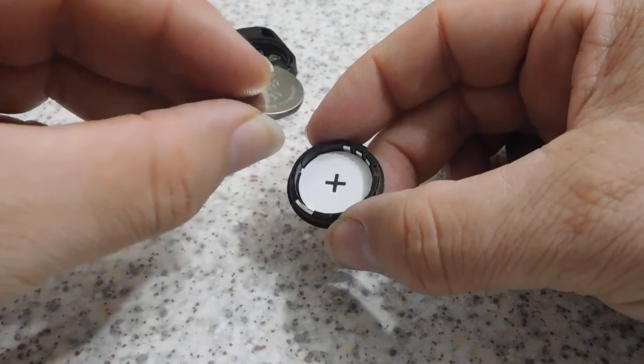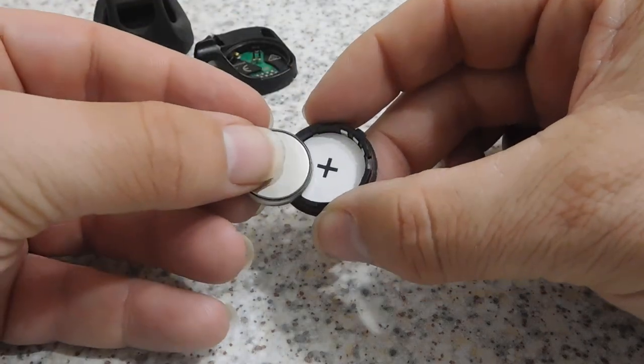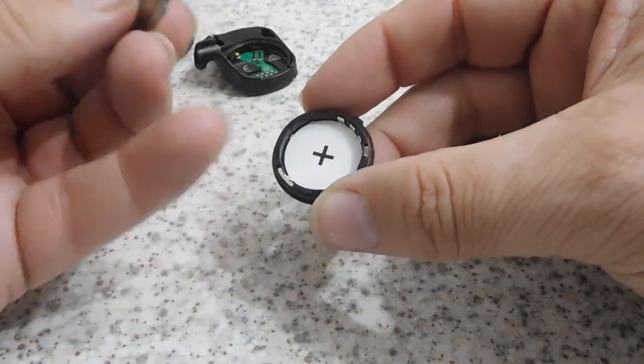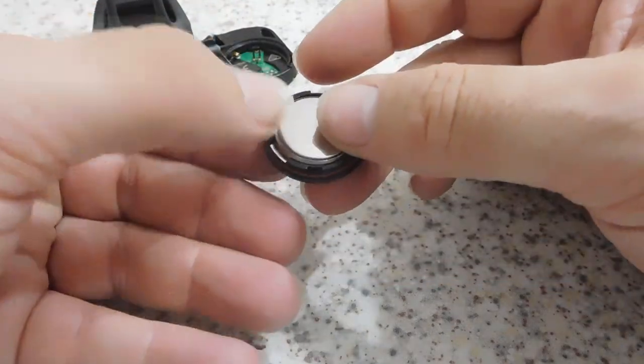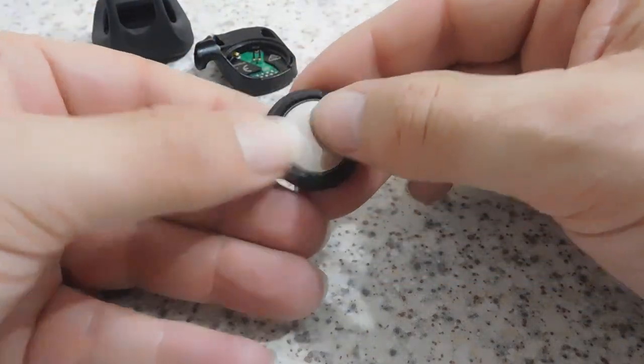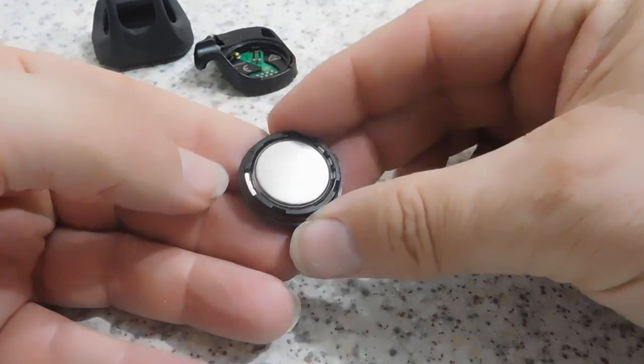You won't have any trouble getting those. Get them on Amazon if you can't find one locally. Just pop the new one in, plus symbol facing up, same way as you got it out.